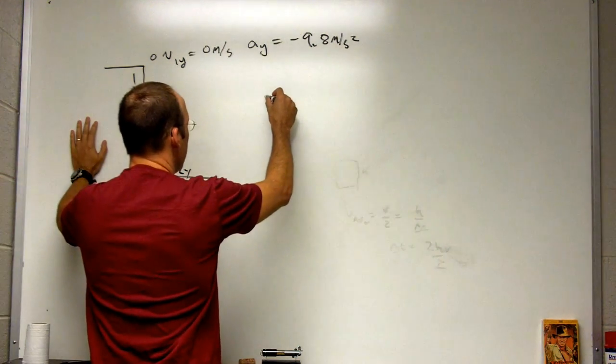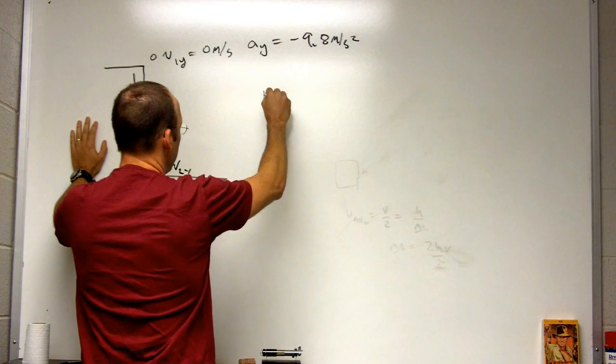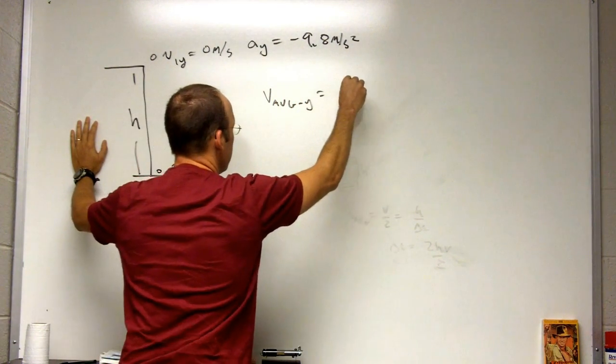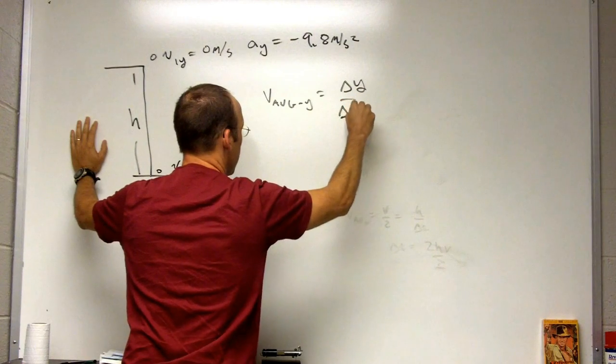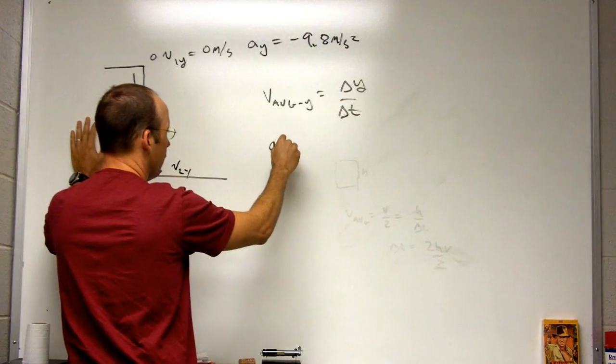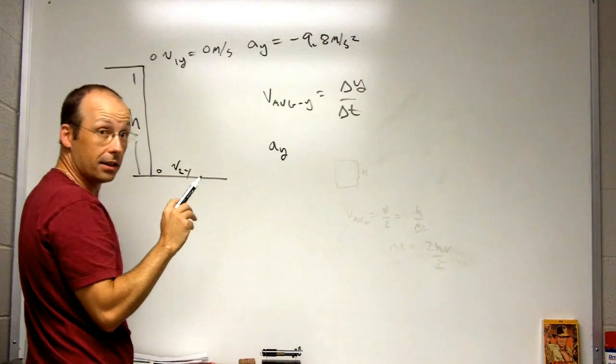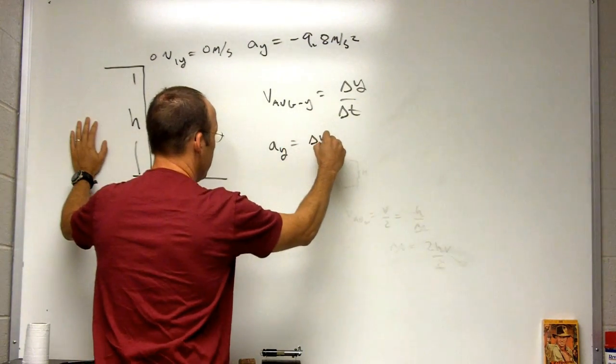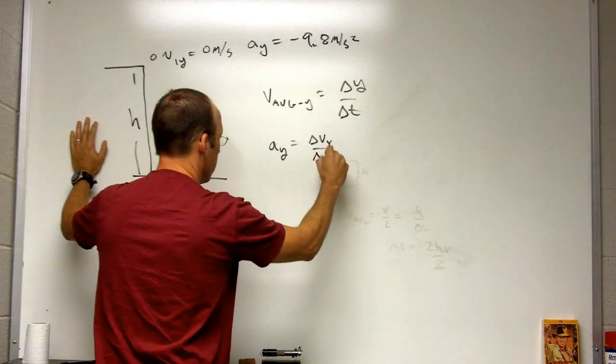There are two things we know. We know the definition of velocity: v average y is the change in y over the change in t. And we know that the definition of the y acceleration, which is constant in this case, so I don't have to say average, is change in vy over change in t.